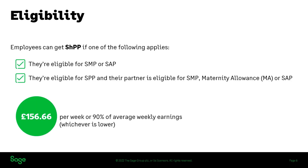As a statutory parental payment, it's paid at a fixed rate of £156.66 per week or 90% of average weekly earnings, whichever is lower. The average will be taken in the eight-week period up to the qualifying week — the same average that would be used for maternity pay or checking the qualifying conditions for paternity pay. So it's the same as the standard rate of the other statutory payments.